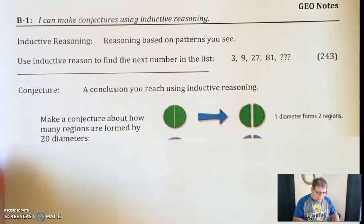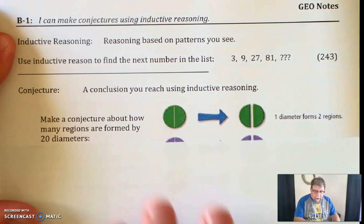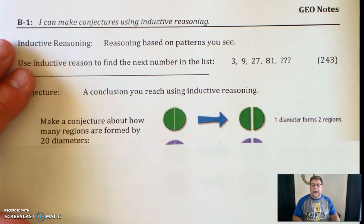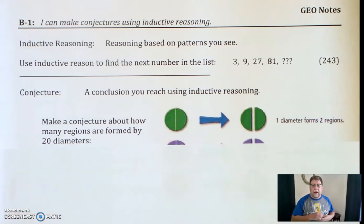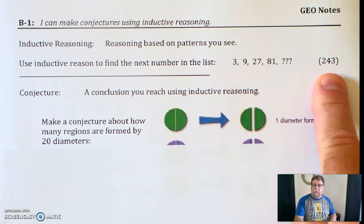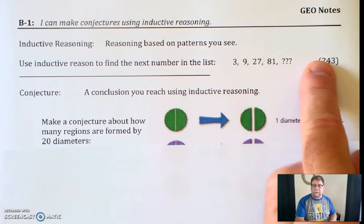So if we look at this next question, it's a conjecture. First of all, what a conjecture is. A conjecture is simply the conclusion you reach when you are using inductive reasoning. Up here, our conjecture was that the next term was 243.